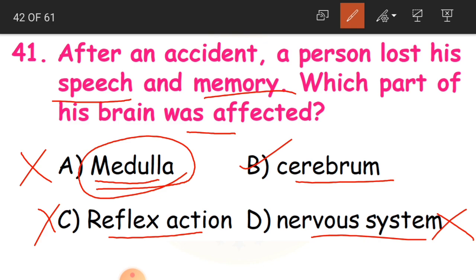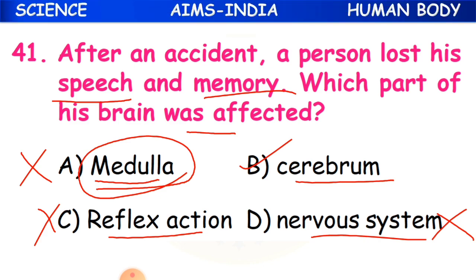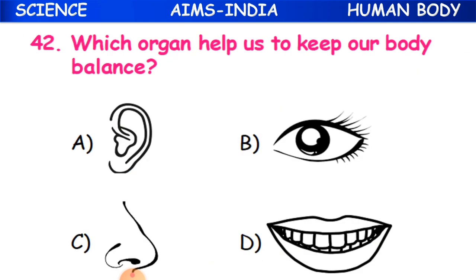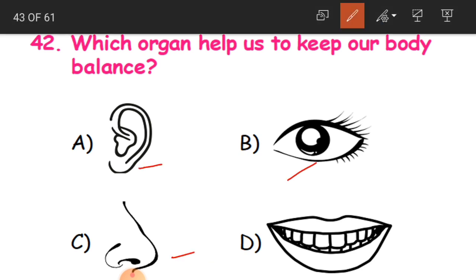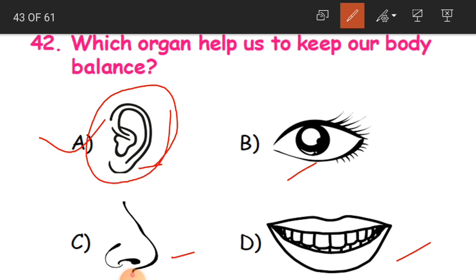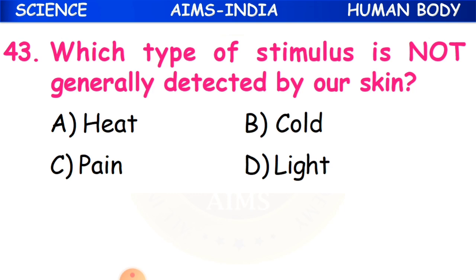The cerebrum is a very important part of the brain where all body parts are controlled. Question 42: Which organ helps us keep our body balance? The options are ear, eye, nose, and mouth. The answer is A - the ear. Inside the ear you have the inner ear which controls balance.